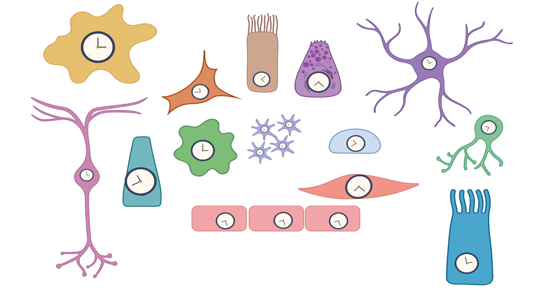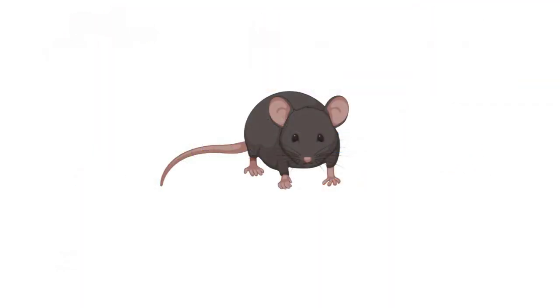Molecular circadian clocks exist in nearly every cell in the body. To study circadian rhythms at a cellular level, cell cultures are created by harvesting tissues from an organism. This procedure isolates the cellular clocks from the influence of other organs or the environment.